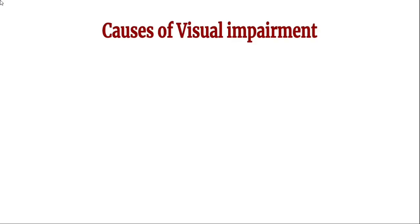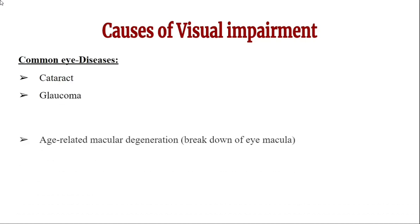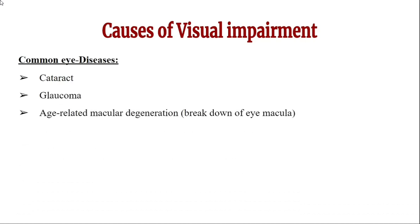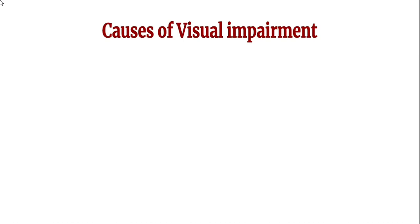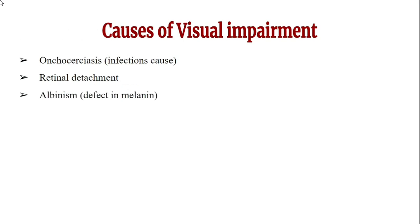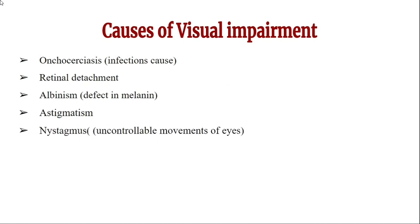Major causes of visual impairment include: cataract, glaucoma, age-related macular degeneration (breakdown of the eye macula), corneal ulcers, diabetic retinopathy, childhood blindness, Bitot's spots, xerophthalmia, conjunctivitis, onchocerciasis (infection causing retinal detachment), albinism (defect in melanin), astigmatism, nystagmus (uncontrollable eye movements), optic atrophy, and trachoma (eye infection).